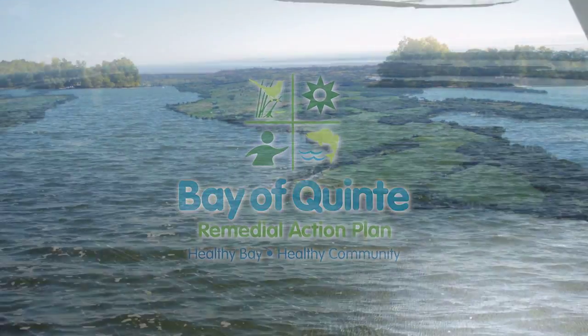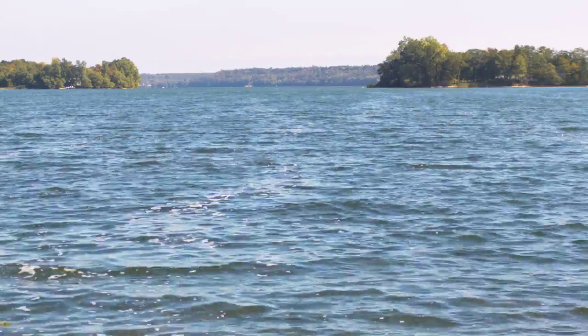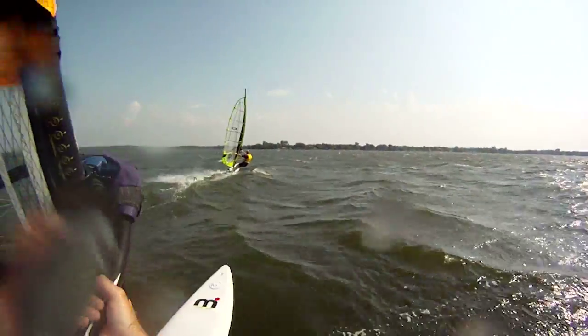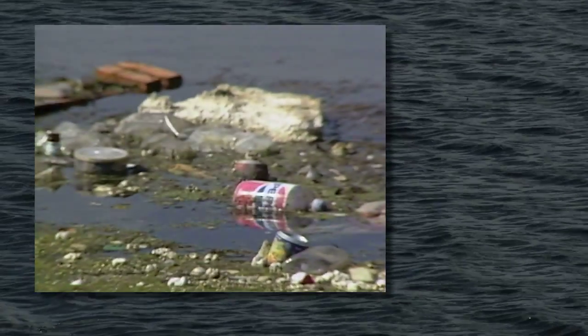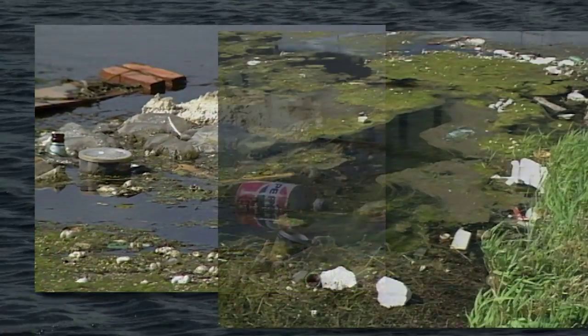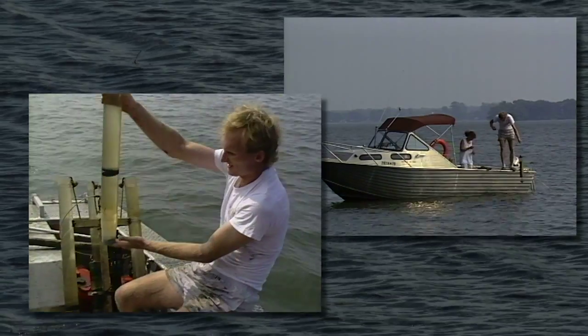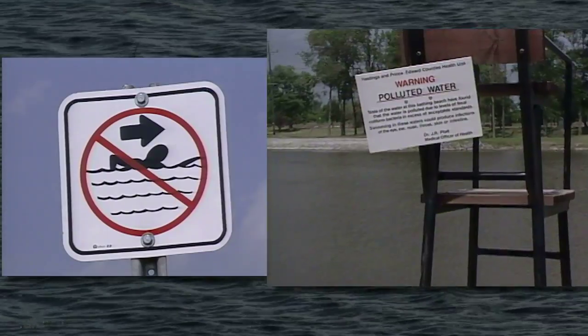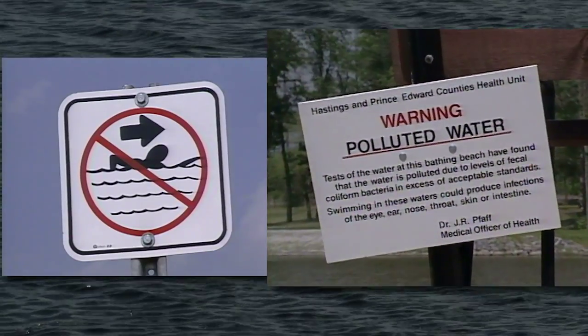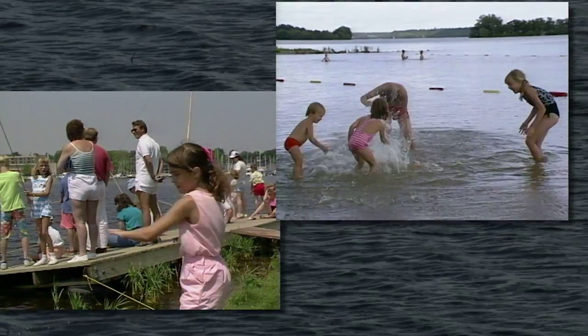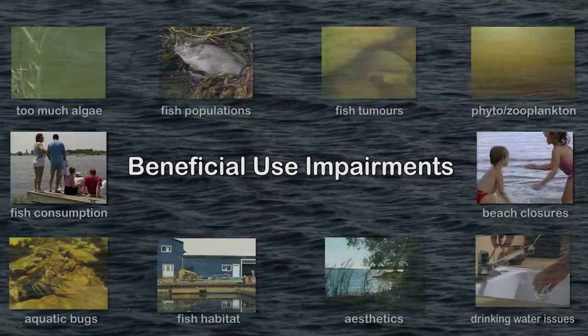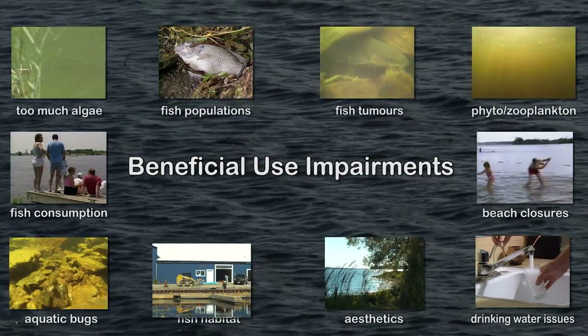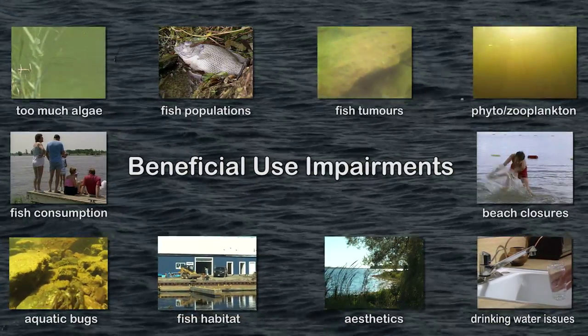The Bay of Quinte Remedial Action Plan is restoring the environmental integrity and the long-term viability of the Bay of Quinte ecosystem. In the early 1990s, environmental damage that had been occurring to the Bay of Quinte for decades was identified and documented in a remedial action plan. This plan identified the environmental challenges that threatened the Bay of Quinte ecosystem and people's use and enjoyment of the Bay. Those environmental challenges were grouped together and called beneficial use impairments. The Bay of Quinte has 10 beneficial use impairments, and the Remedial Action Plan implements actions to address them.